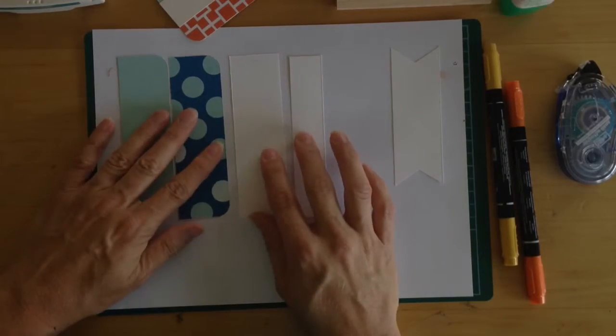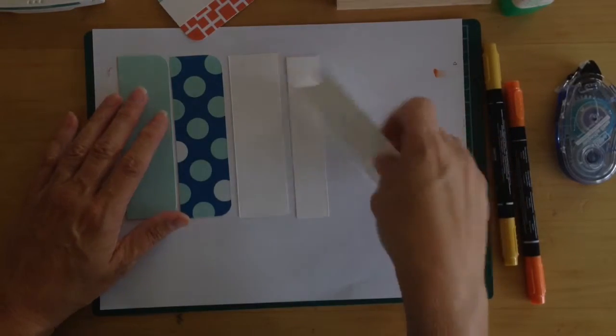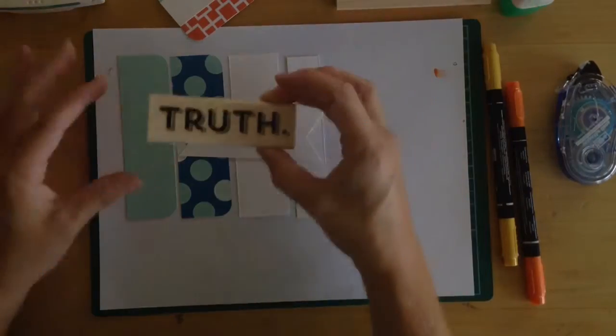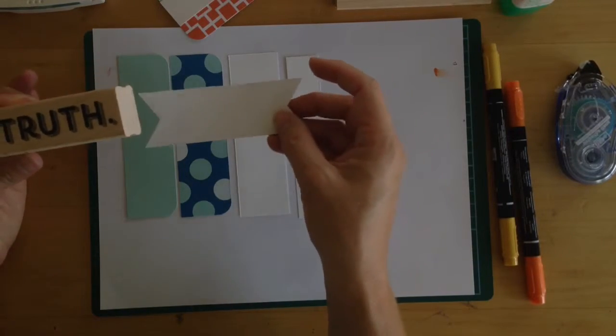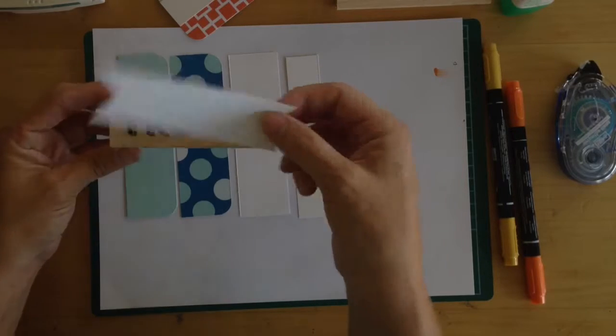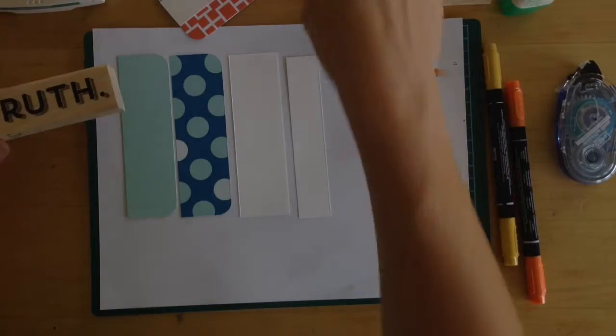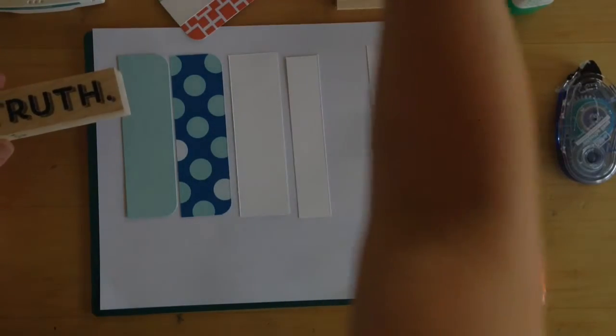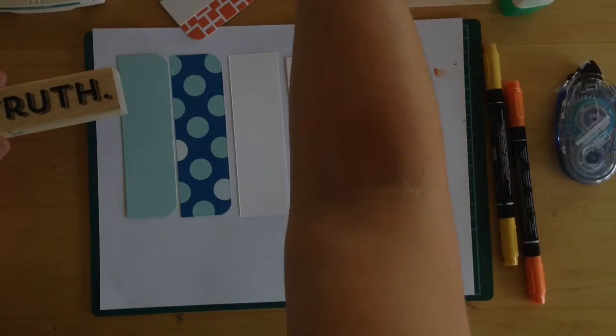So once you've gotten all your strips taken care of, if you're going to use the word truth stamp, you can use the triple banner punch and cut it down because the word truth fits very nicely on there. And that's from your five inch strip by one and a half inch strip. If you're going to be using the remember stamp, you want to keep that length at five inches because that's a longer stamp.